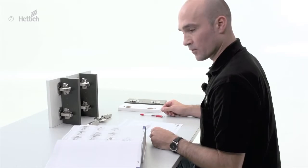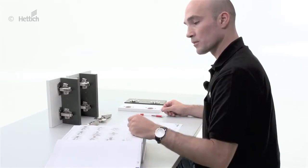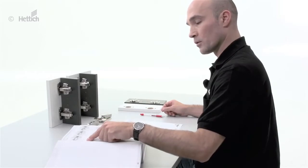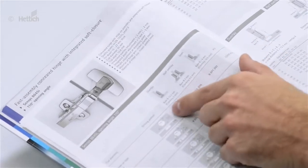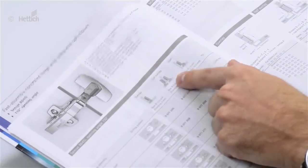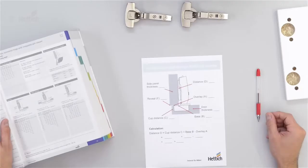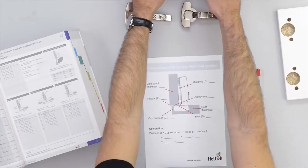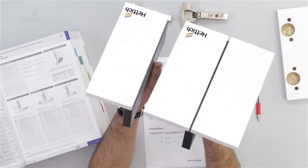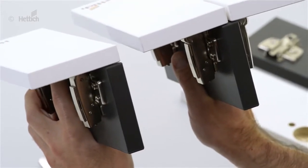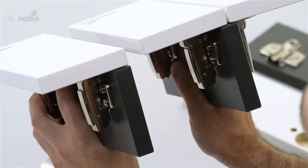In this step we want to demonstrate how to calculate a standard full overlay application. We go to the catalog page and we see there are two different types of overlay applications: full overlay and half overlay. We can also have a look at the mock-ups and you can see that there is a different shape of the hinge arm, which gives us the base B of the hinge.